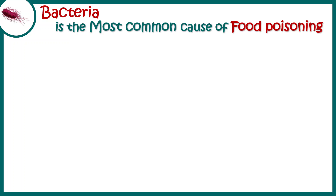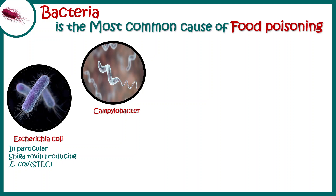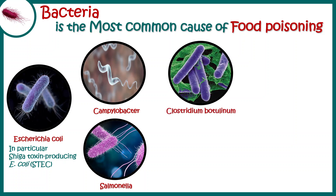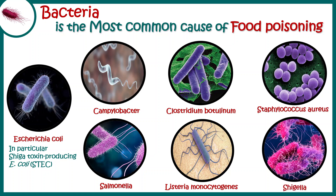Now let's talk about the bacteria most commonly associated with food poisoning. These include Escherichia coli, which is also normally present in our alimentary canal — generally friendly, but some species can cause food poisoning. Others include Campylobacter jejuni, Salmonella, Clostridium, Listeria, Staphylococcus, and Shigella.